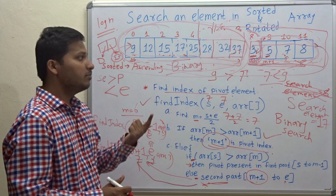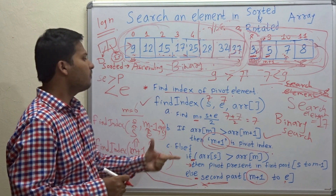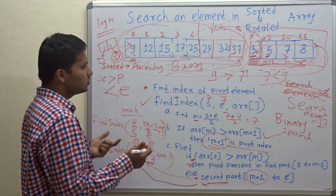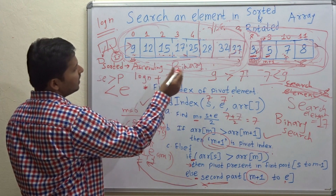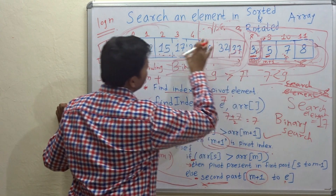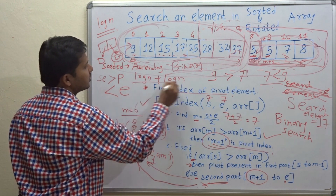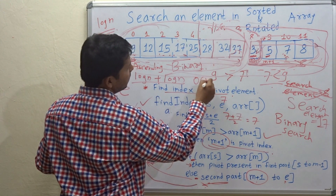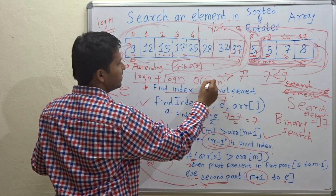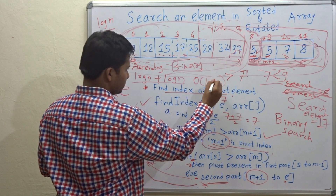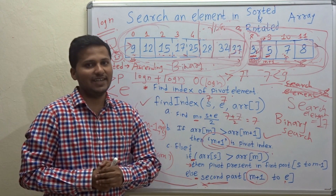Now let's see the time complexity. Finding the pivot element uses binary search — that is O(log n). Then we apply binary search again for searching the element inside one of the parts — that is also O(log n). So log n + log n is O(log n). The overall time complexity is O(log n). This is how we search an element in a sorted and rotated array.